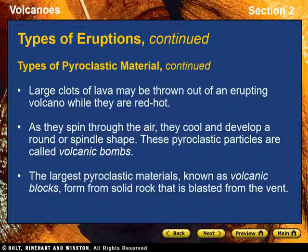Large clots of lava may be thrown out of an erupting volcano while they are red hot. As they spin through the air, they cool and develop a round or spindle shape. These pyroclastic particles are called volcanic bombs. The largest pyroclastic materials, known as volcanic blocks, form from solid rock that is blasted from the vent. Some volcanic blocks are the size of a small house.